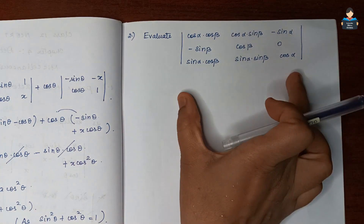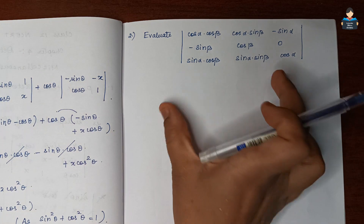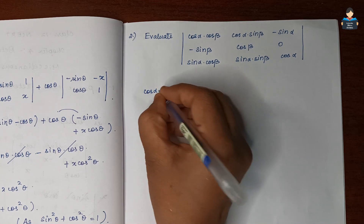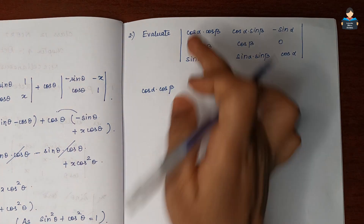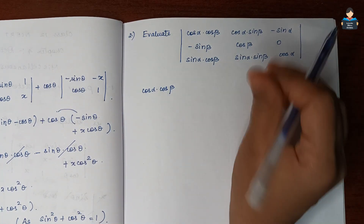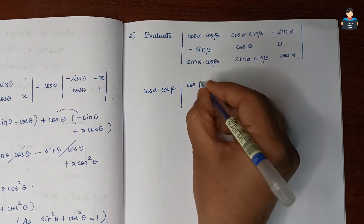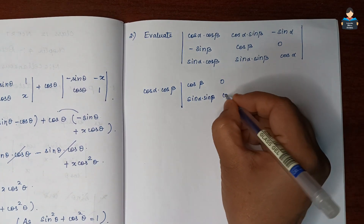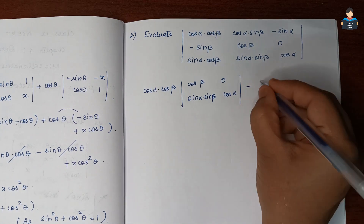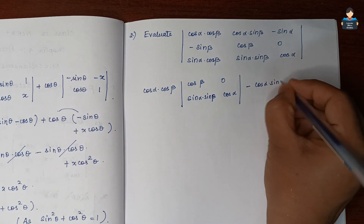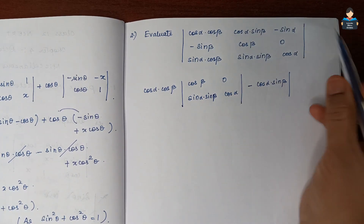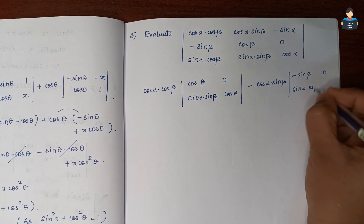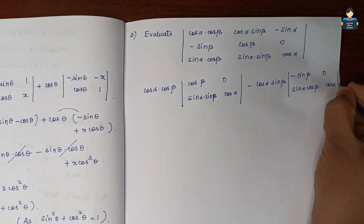The second question asks us to evaluate a given determinant. Expanding along the first row: the first element is cos alpha times cos beta. We look at the corresponding minor: cos beta, 0, sin alpha, sin beta, cos alpha. Then the next term involves minus sin beta, 0, sin alpha, cos beta, and cos alpha.